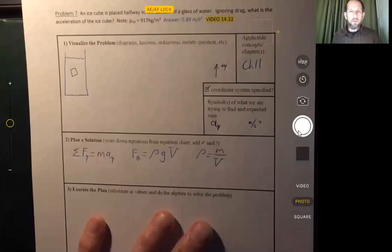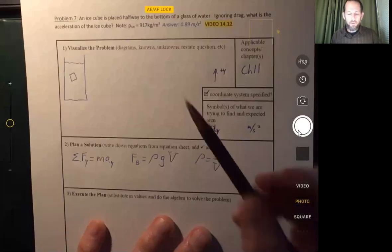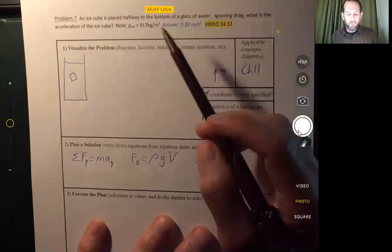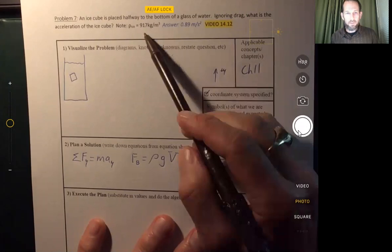Welcome back everyone. We have a problem here with very little information in it. We're given the density of ice and we're told that an ice cube is placed into a glass of water and we're supposed to figure out the acceleration.